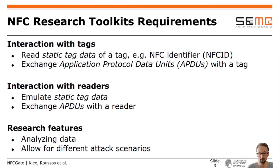In order to interact with tags, the toolkit must read so-called static tag data, for example the NFC identifier. In addition, the toolkit must have the ability to exchange application protocol data units with a tag. To interact with a reader, the toolkit must feature acting like a tag — emulating static tag data and responding to APDUs sent by a reader. A research toolkit should also provide additional research features such as analyzing data and testing different attack scenarios easily.